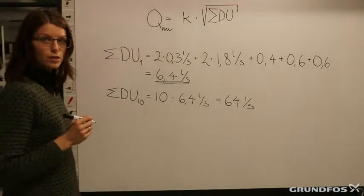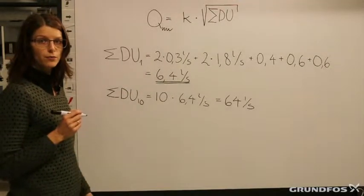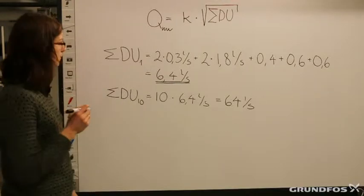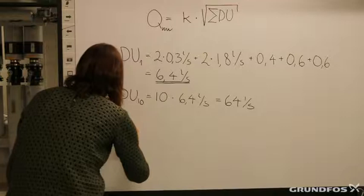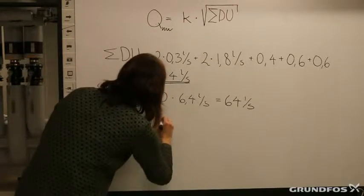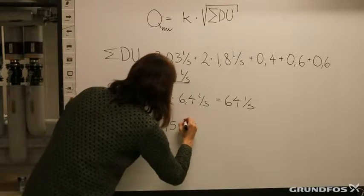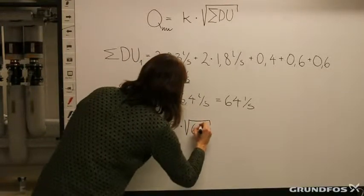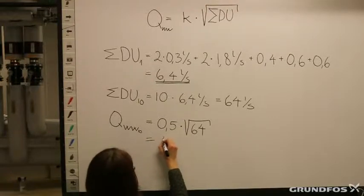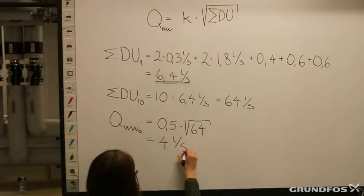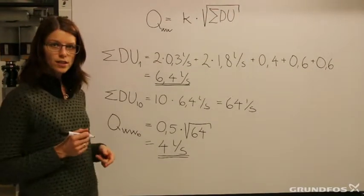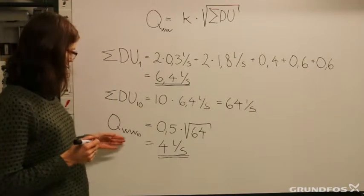Then we need to determine the K factor. As we remember from the table shown just before, we had a K factor for dwellings of 0.5. So we can calculate the wastewater from the 10 dwellings: it will be 0.5 times the square root of 64. This gives us a wastewater flow rate of 4 liters per second from this apartment building.